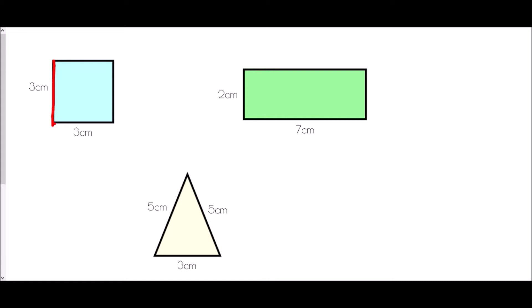The first case is a square — we know it's a square because the height and the width are exactly the same length: three centimeters each. Since all sides of a square are equal, the top must also be three centimeters and the other side three centimeters as well. Walking all the way around: three, six, nine, twelve centimeters. The perimeter is twelve centimeters.